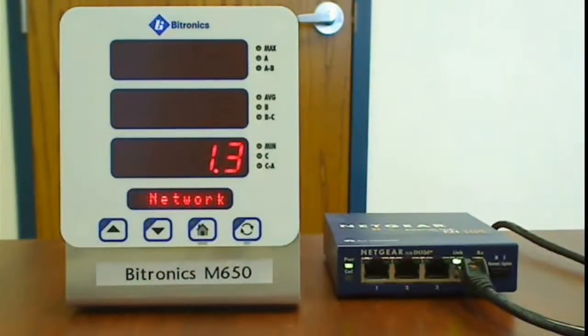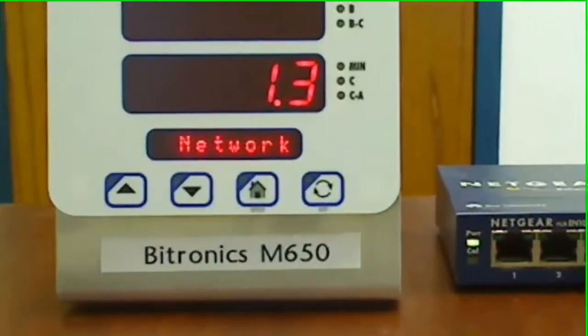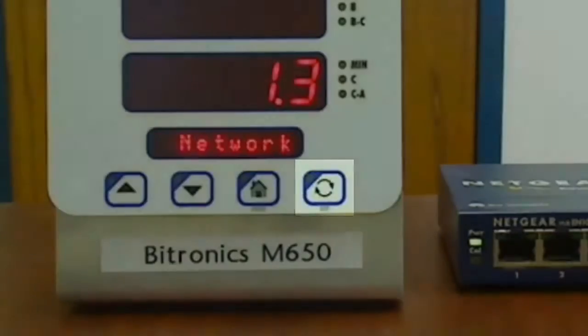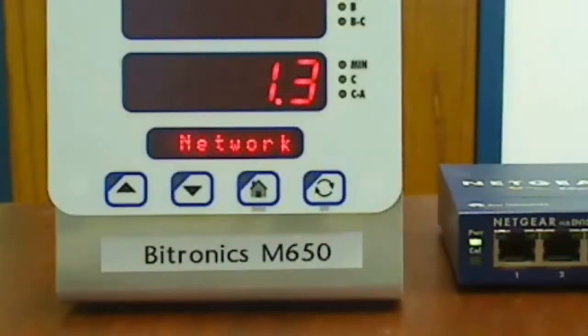It may be a little hard to make out the fine print in this video, but the home key has the word enter written below it, and the cyclone key, the one on the far right, has the word exit written below it. When you get to the category you're interested in, use the enter key to select that.